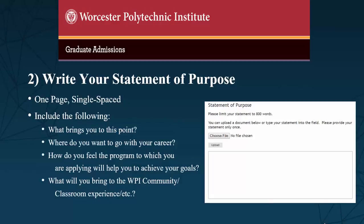Most graduate programs at WPI require a statement of purpose as part of the application process, which may be uploaded or copy-pasted into the appropriate area of the application. This statement should be a short essay of three to five paragraphs in length, and it is a student's opportunity to highlight their unique capabilities. Make sure that you include any additional training or skills that you may have completed which may not be listed on your transcripts, if you feel it would strengthen your application. This may include an explanation of thesis work completed, or other formal training such as a capstone project.